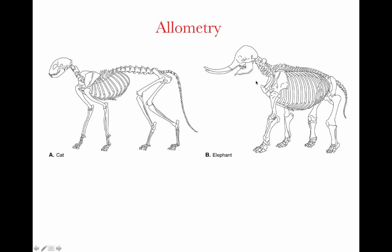The other thing to notice is that in the larger animal, the limb bones are shorter and thicker relative to those in the cat. Of course they're absolutely longer than the cat's, but in proportion to the elephant's overall body size, these limbs are much shorter and thicker.